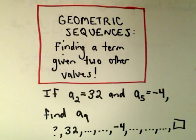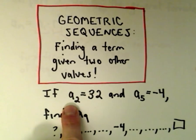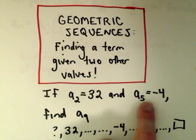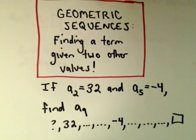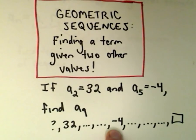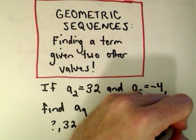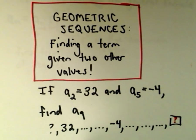This is going to be part two of my very overdue video on geometric sequences. We're given two terms: a sub 2 equals 32 and a sub 5 equals negative 4, and we want to find the value of a sub 9. We don't know the first term, we know the second one is 32, and we're told the fifth one is negative 4. If you didn't see part one, I'll put a link to it — you may want to check that out before watching this one.